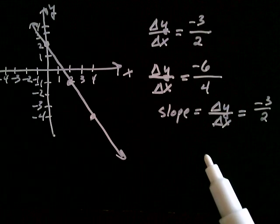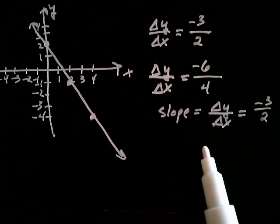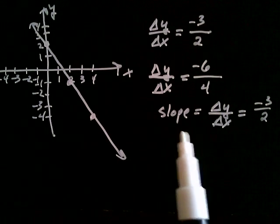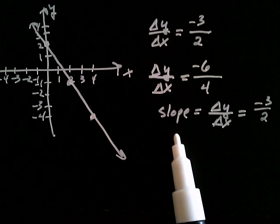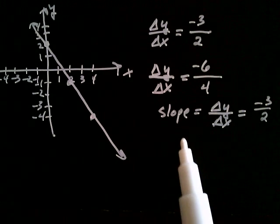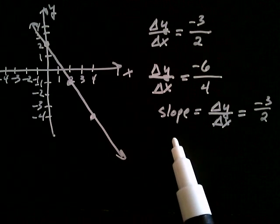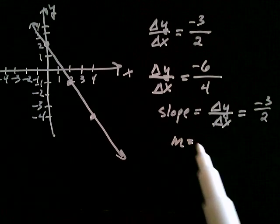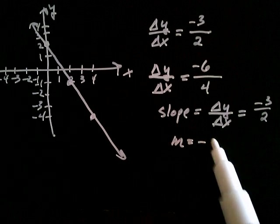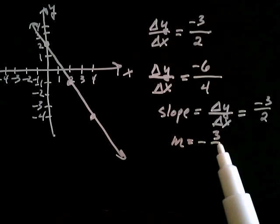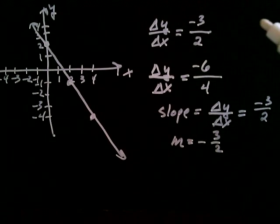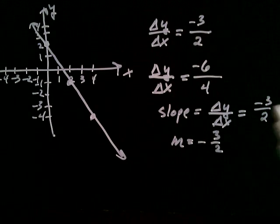Now, people usually don't write the word slope — they abbreviate it with the letter m. So m for slope. In this case, m is equal to negative 3 over 2. And m for the previous line, that slope was equal to 2.